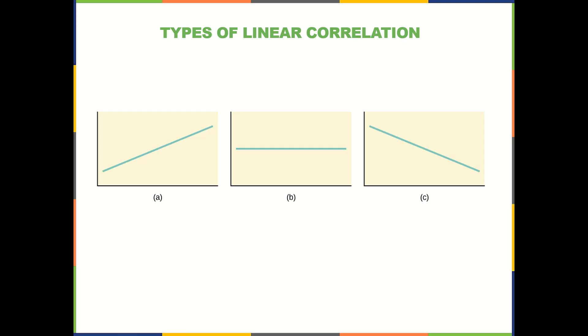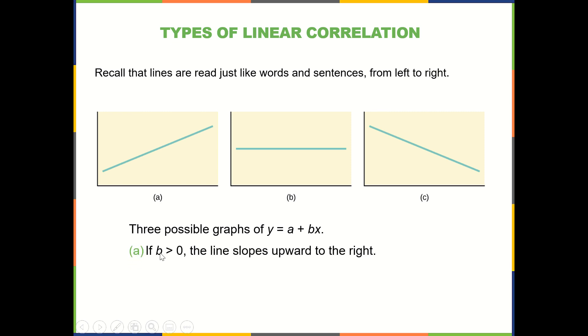Let's talk about different types of linear correlation, or linear patterns in general. Recall that lines read from left to right just like words. So if you have a positive, in this case, remember a plus bx is what we're using here. So b represents the slope in this notation.